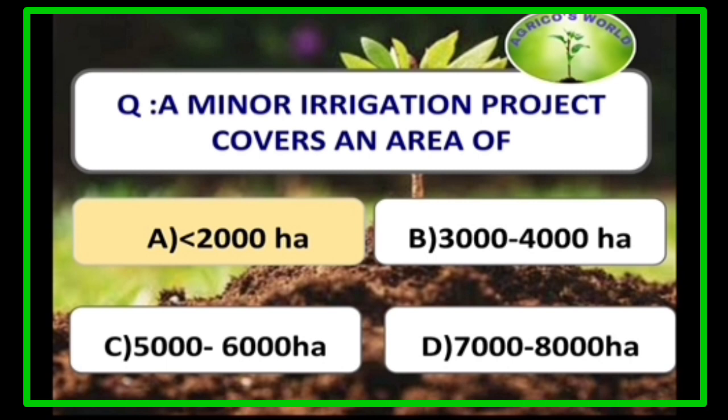A minor irrigation project covers an area of less than 2,000 hectares. A medium irrigation project covers an area of 2,000 to 10,000 hectares, and a major irrigation project covers an area of greater than 10,000 hectares.